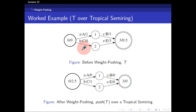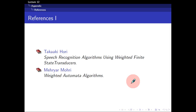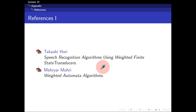Putting back all the inputs and outputs, before weight pushing you have the original transducer, and after weight pushing — written as Push T over a tropical semi-ring — you get the redistributed result. And with that, I've come to the end of the lecture. For further references, read 'Speech Recognition Algorithms using Weighted Finite State Transducers' by Hori, and 'Weighted Automata Algorithms' by Mohri.